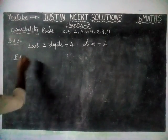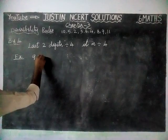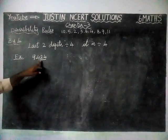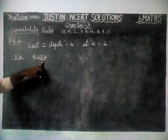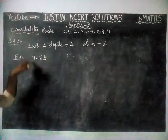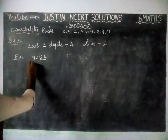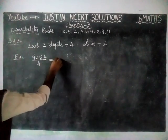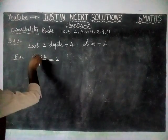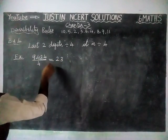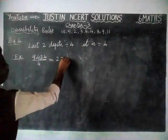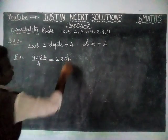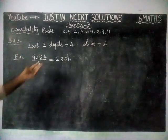We will take number 924. The last two digits are 24. Since 24 is divisible by 4, the whole number is divisible by 4. We verify: in 9 we have two 4's making 8 remainder 1; in 14 we have three 4's making 12 remainder 2; in 22 we have five 4's making 20 remainder 2; and 6×4 are 24. So the given number 924 is divisible by 4.